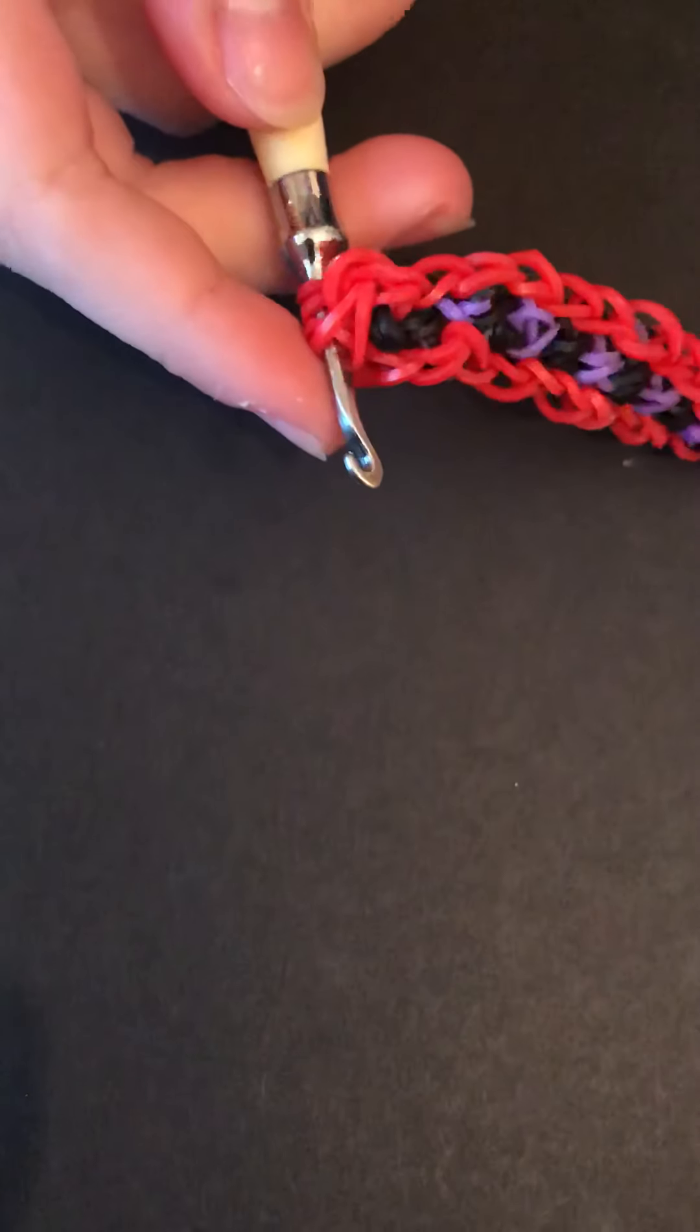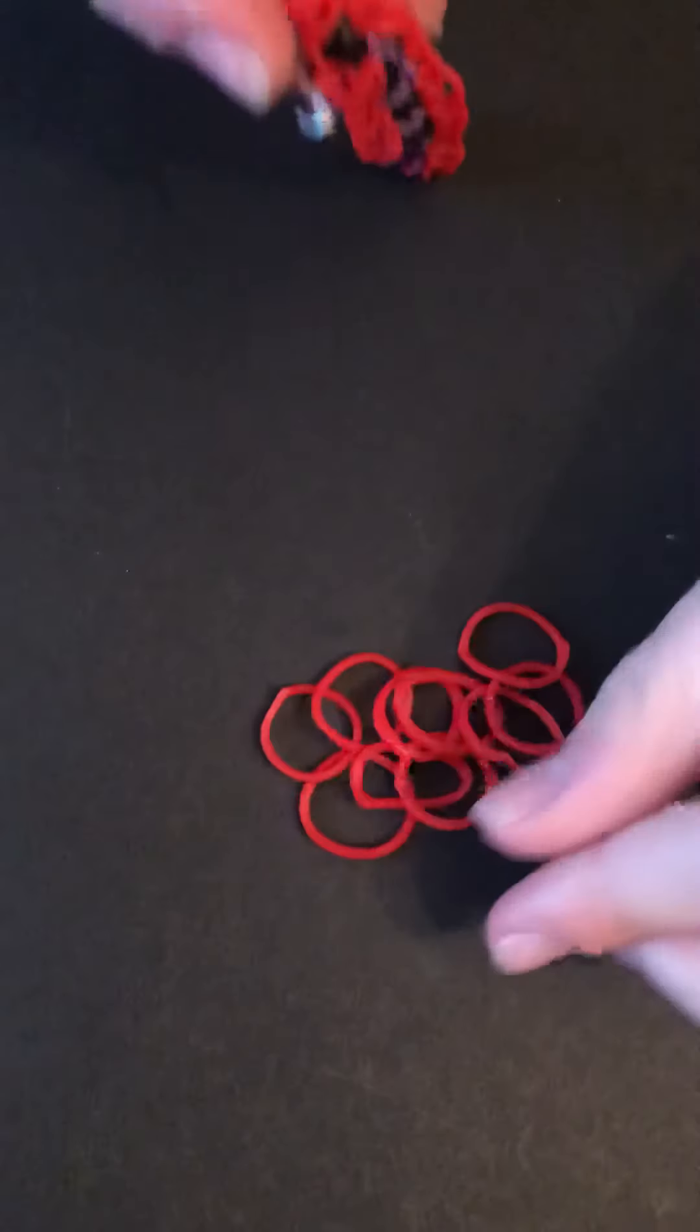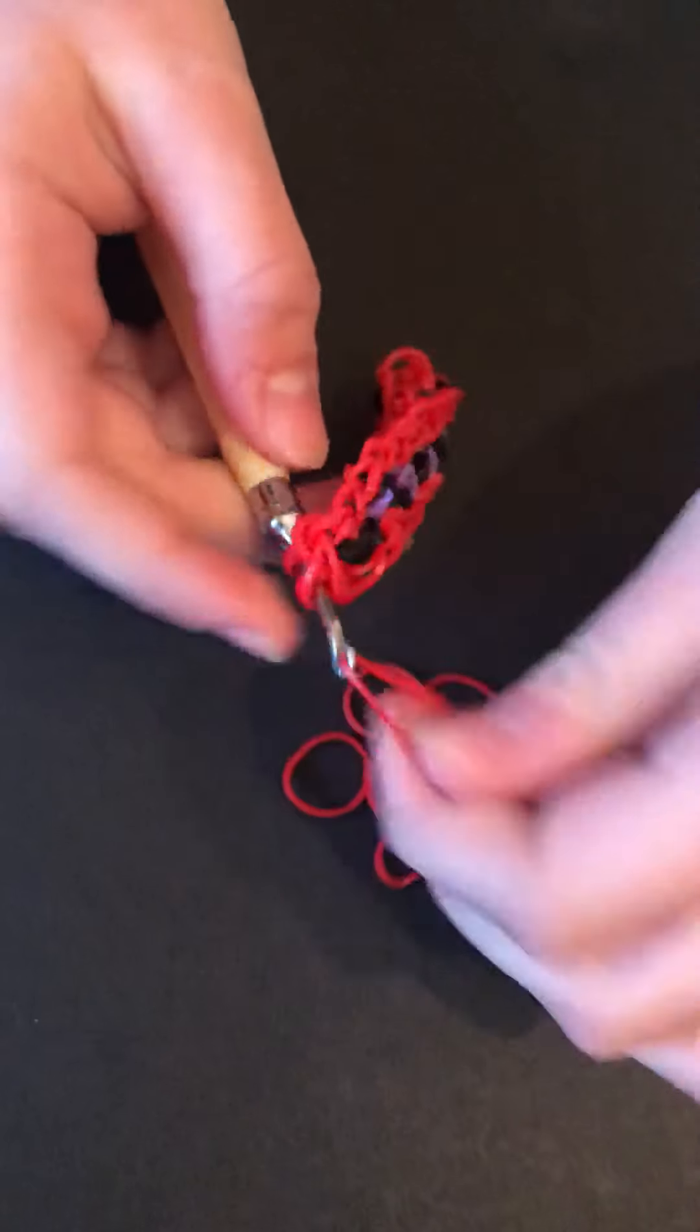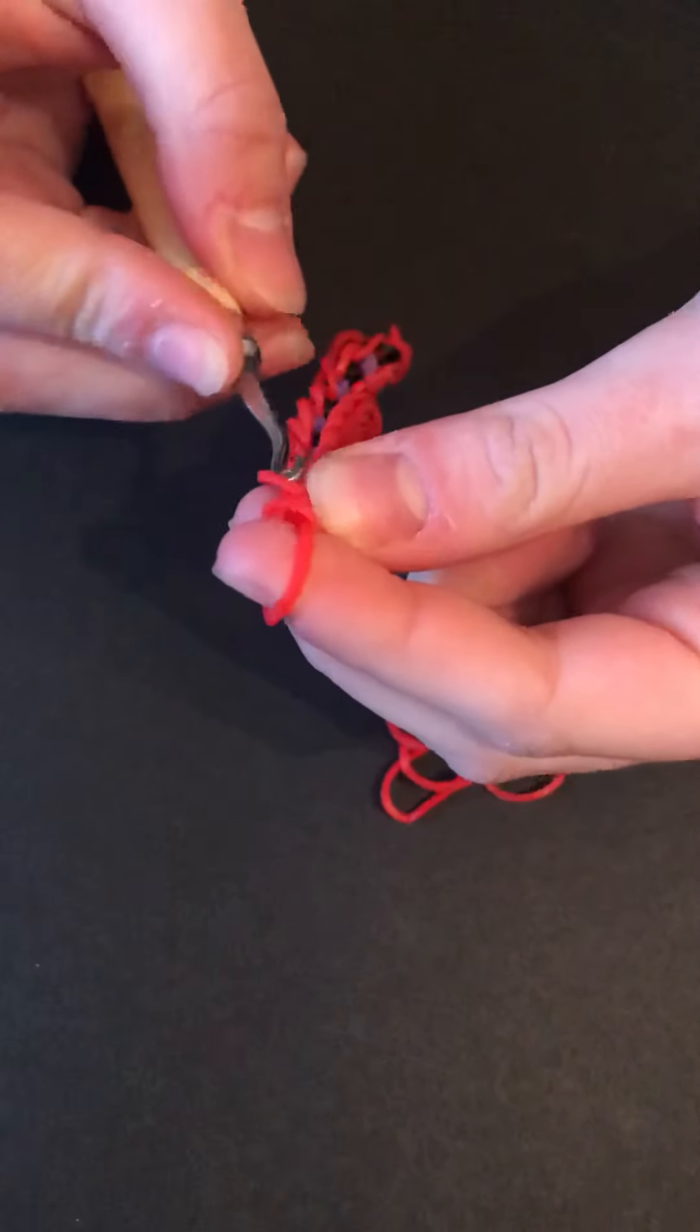So now you're going to take more of your border color or whatever color you would like to use. Put a band on the hook, pull it through, and put both ends on your hook. Then just do that until you think it's good for your wrist size.